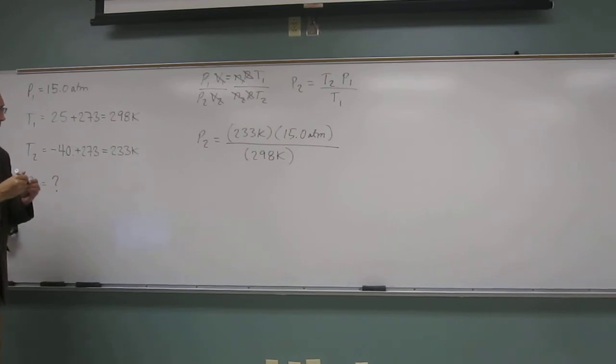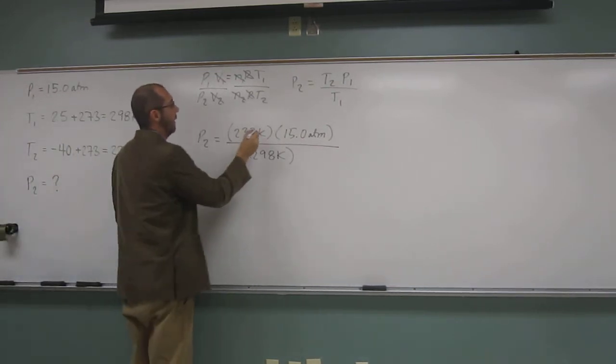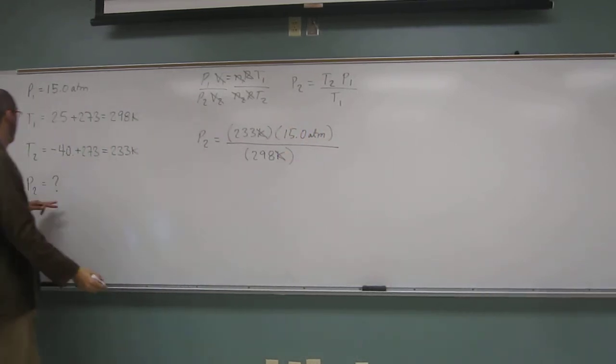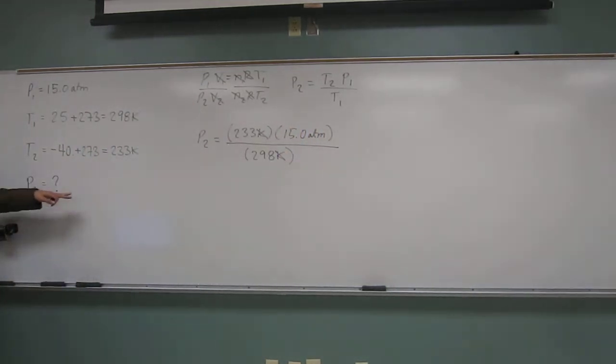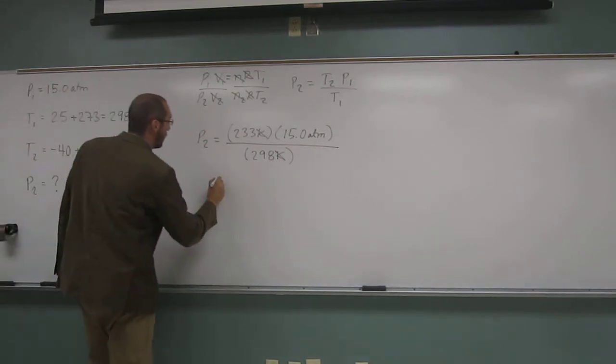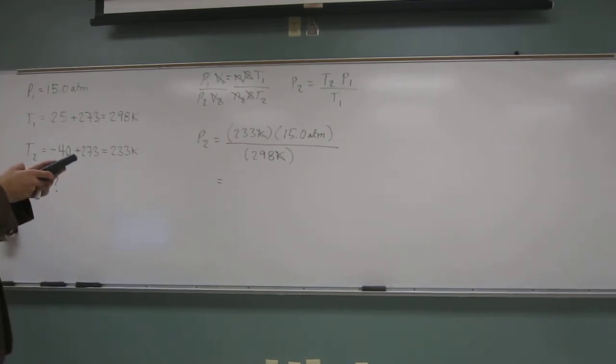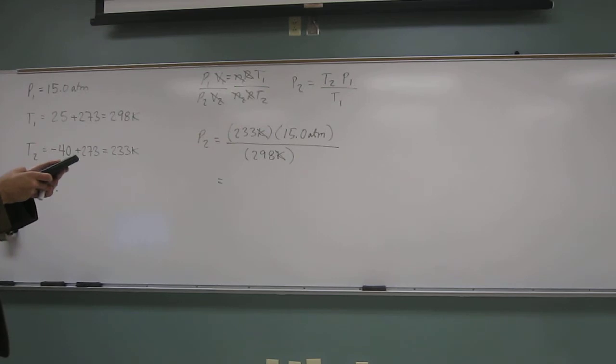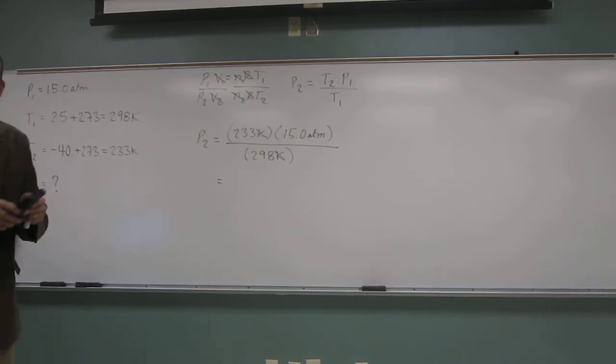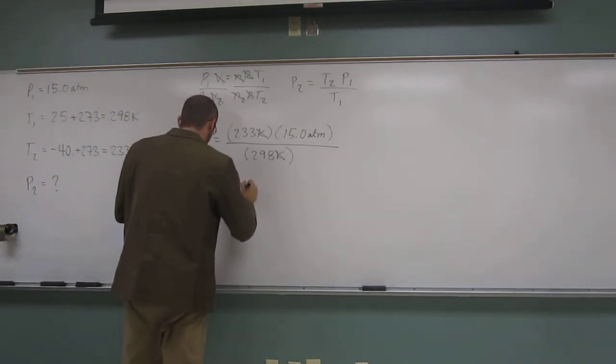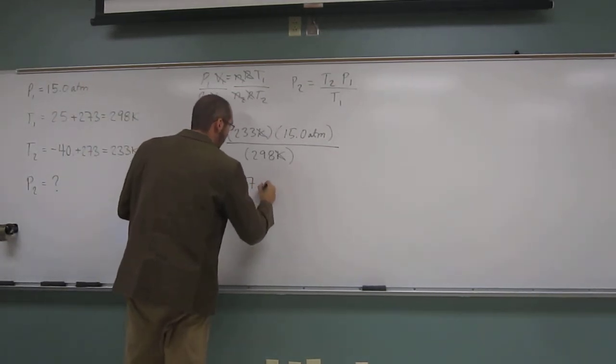So hopefully you guys see that Kelvins are going to be canceled out, leaving us with units of ATM. Pressure units of ATM are good units. So we've probably done the right thing. So let's do this together. So 233 times 15 and then divide that by 298. And this is going to be of course to three significant digits. So I get 11.7.